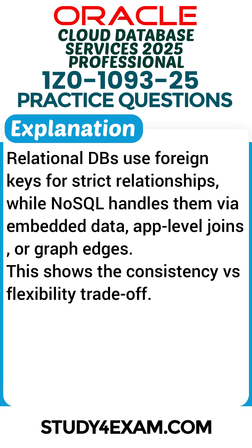Explanation. Relational databases use foreign keys for strict relationships, while NoSQL handles them via embedded data, app-level joins, or graph edges. This illustrates the consistency versus flexibility trade-off between the two database paradigms.